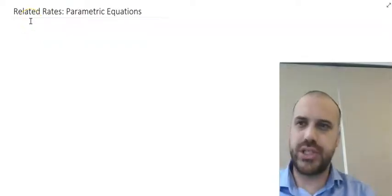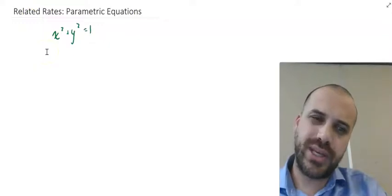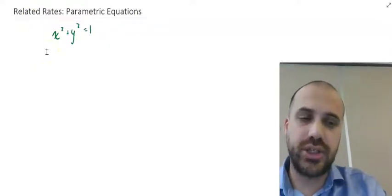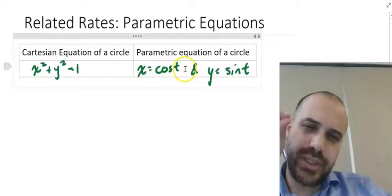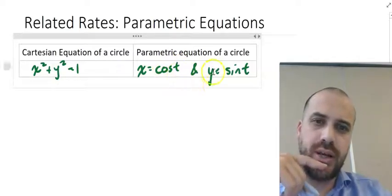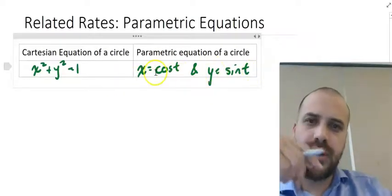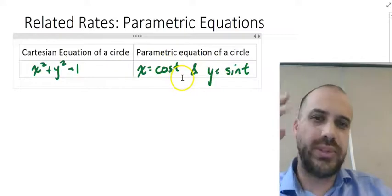You should remember parametric equations from unit 3. For example, x squared plus y squared equals 1 is the Cartesian equation of a circle. You can also express it using a parametric equation: x equals cos t and y equals sin t. You know the x and y coordinates using this other variable t.